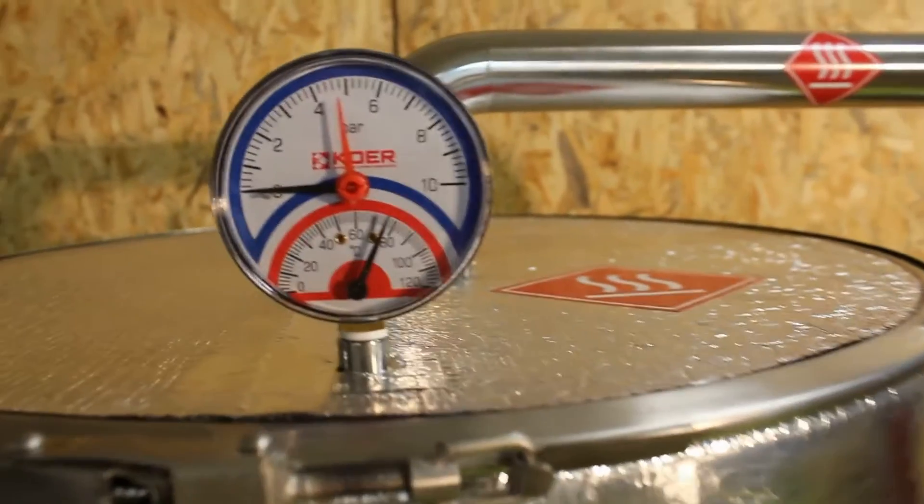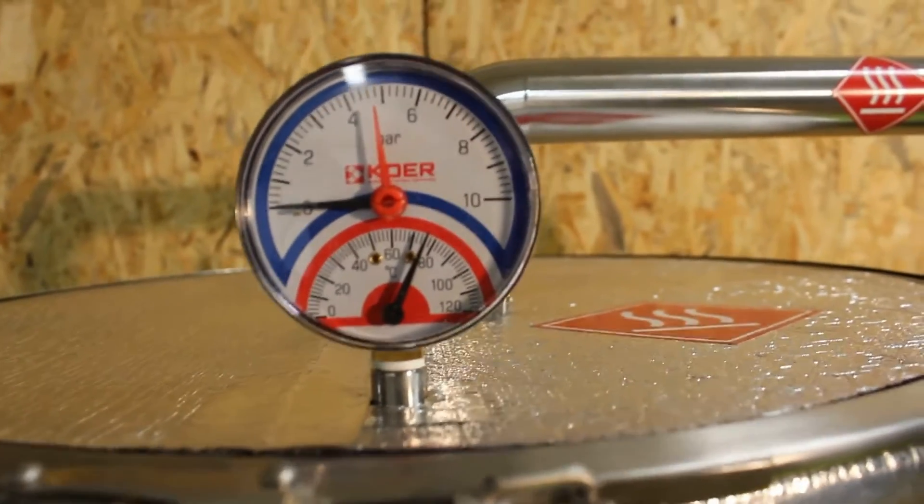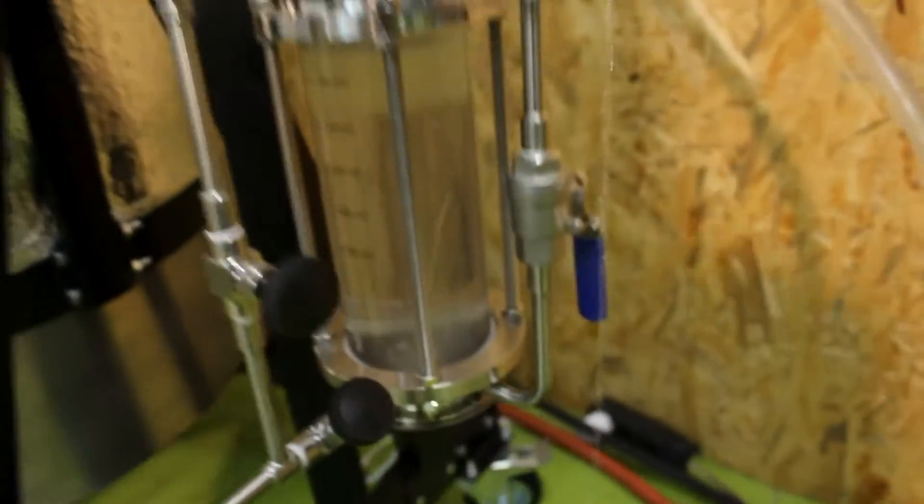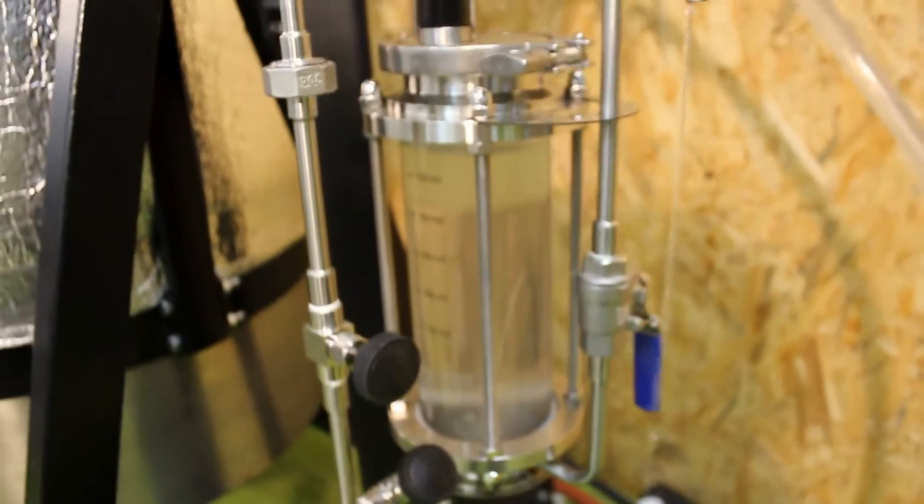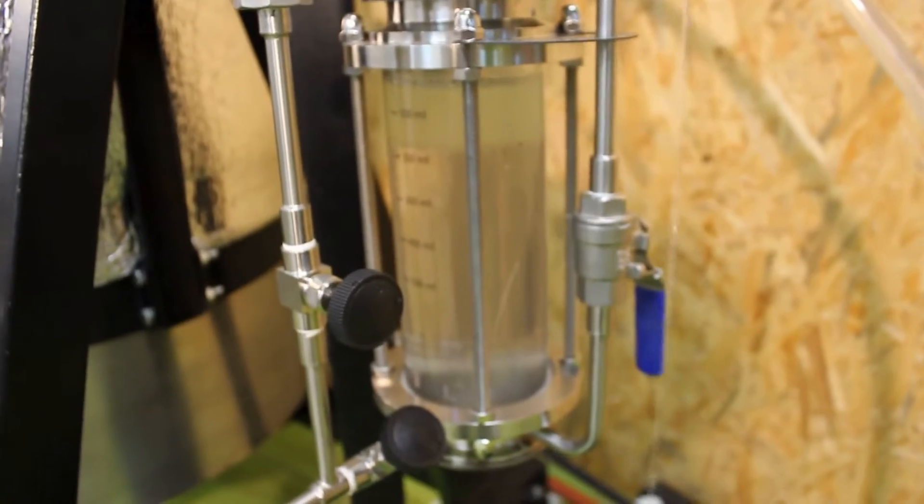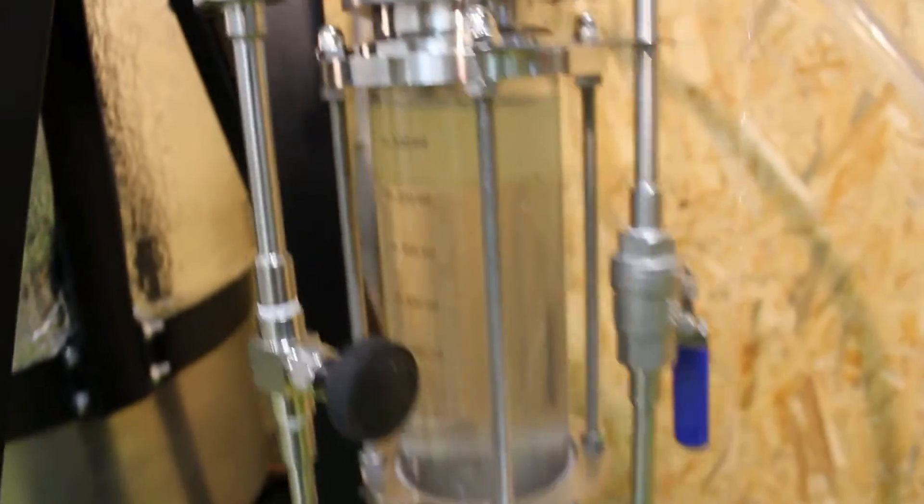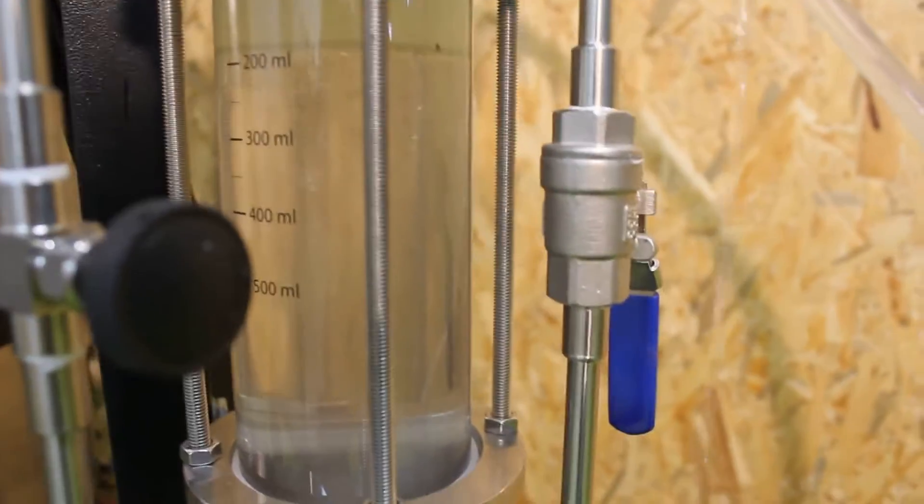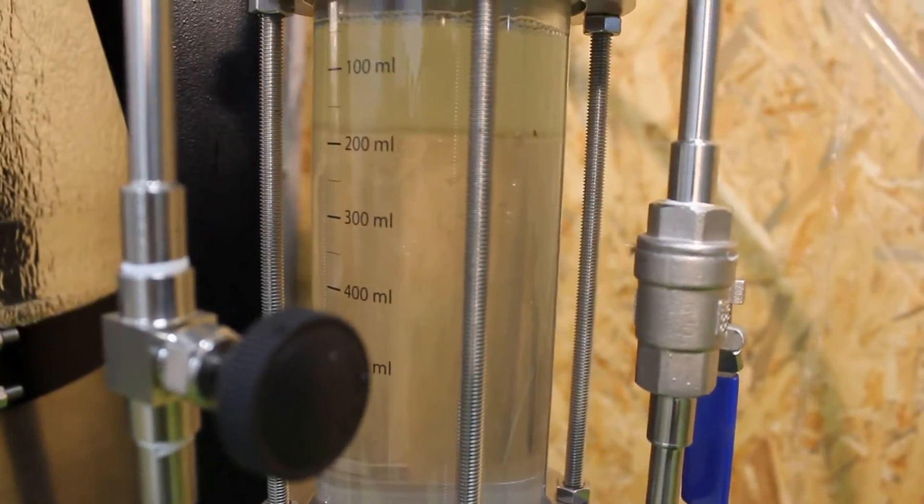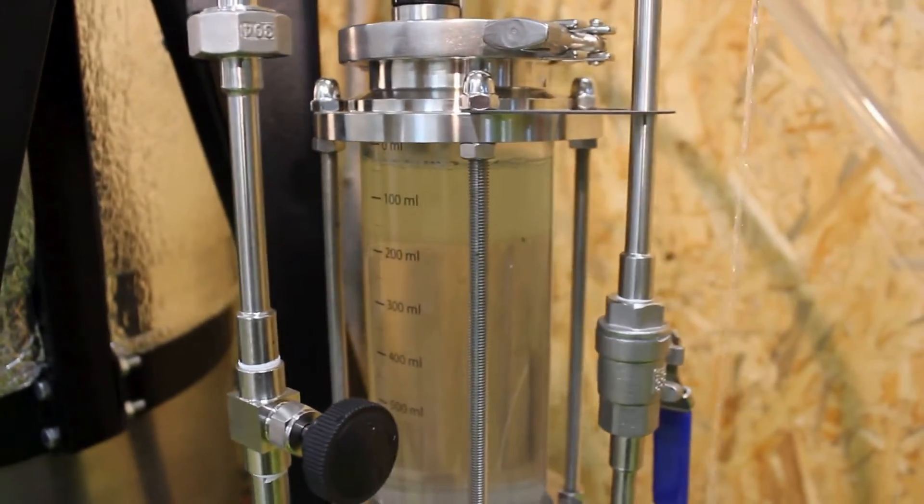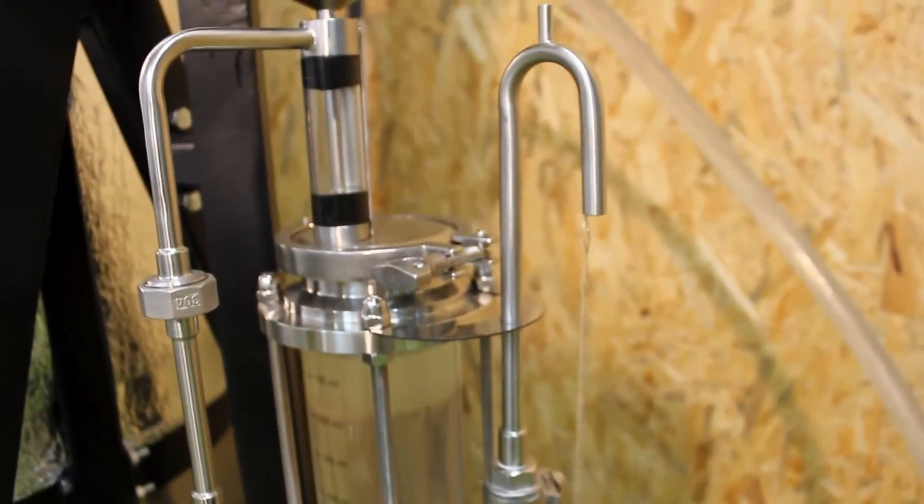We have 75 degrees on the thermometer and we got first drops of hydrosol in the oil separator around 5 to 10 minutes ago. We have got already around 150 milliliters of rosemary essential oil. Distillation is going on.